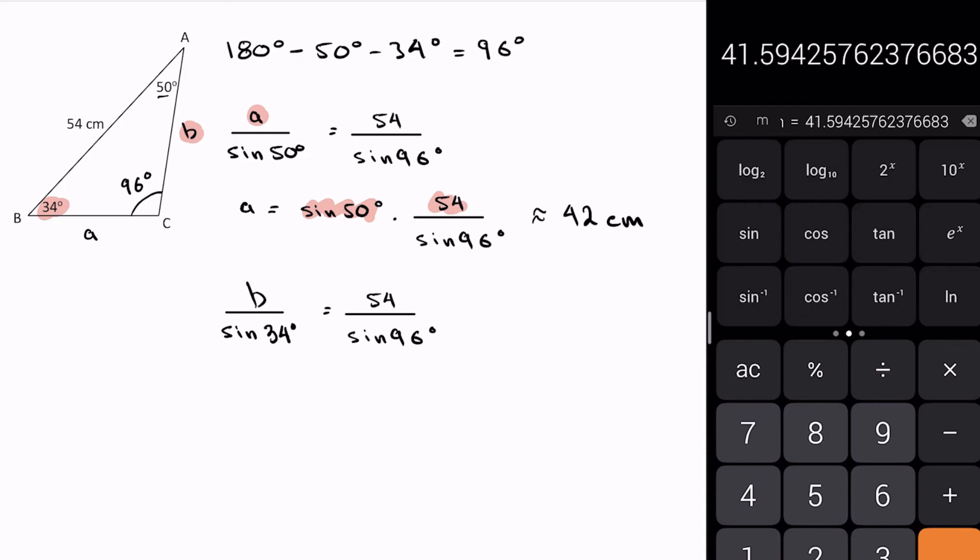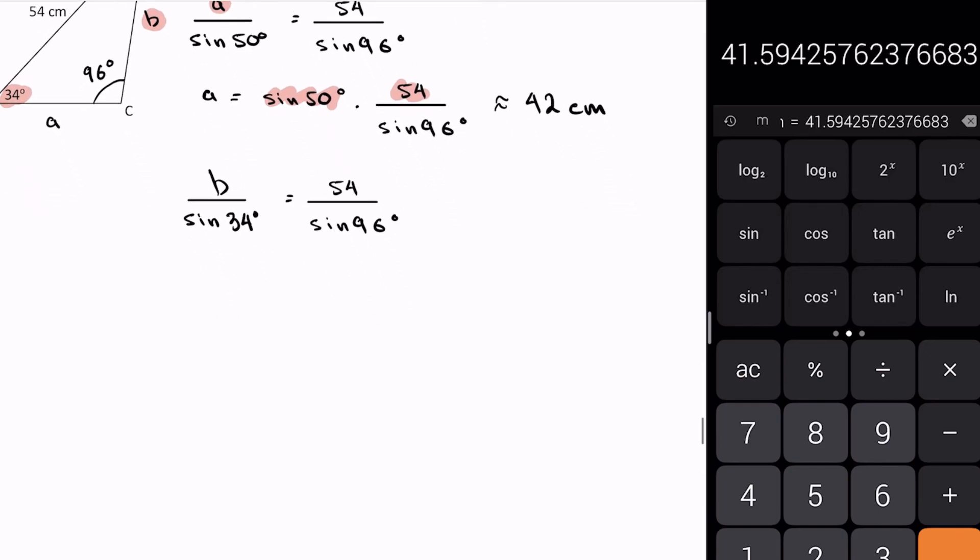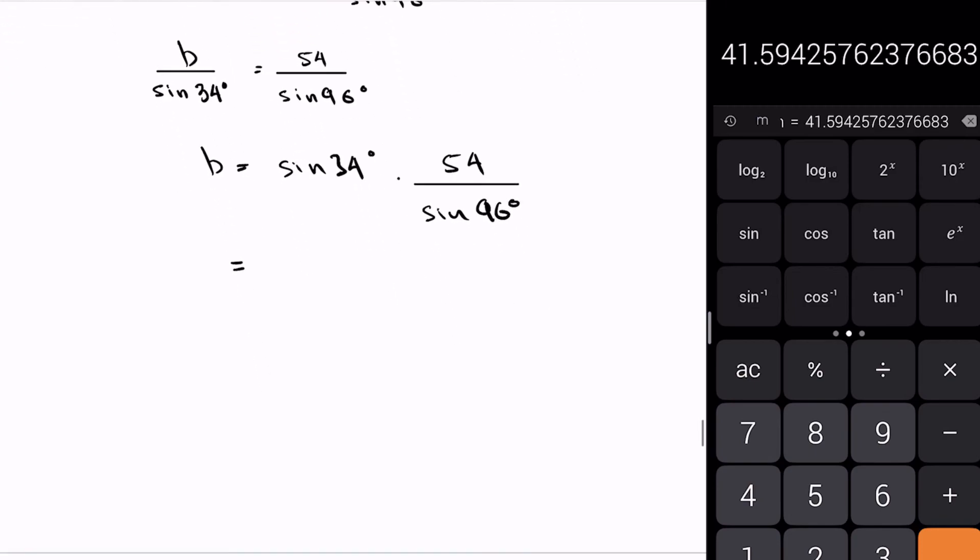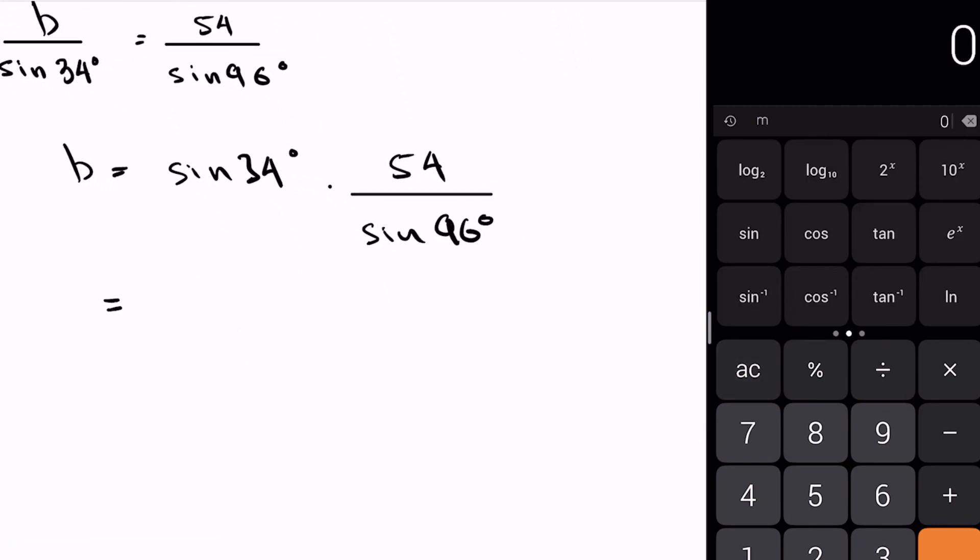Same thing, I'm just going to rearrange my expression. I get b equals sine of 34 degrees times 54 over sine 96. That will give me—let's do the math here—34 sine times 54 divided by 96 sine equals 30.3. Let's just say it's roughly 30 centimeters.